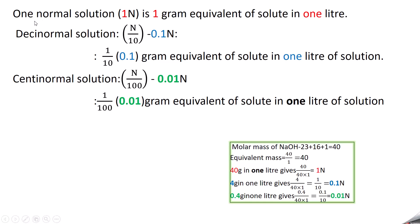A 1 normal solution means 1 gram equivalent of solute in 1 liter, represented as 1N. Desinormal solution means 0.1 gram equivalent in 1 liter, represented as 0.1N. Centinormal solution is 0.01 gram equivalent in 1 liter, represented as 0.01N.